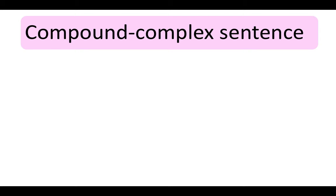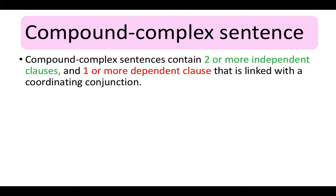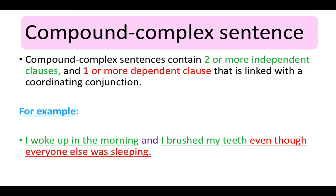Compound-complex sentences contain two or more independent clauses and one or more dependent clause, linked with a coordinating conjunction. For example: I woke up in the morning and I brushed my teeth, even though everyone else was sleeping. Here we can see the independent clauses and the dependent clause.